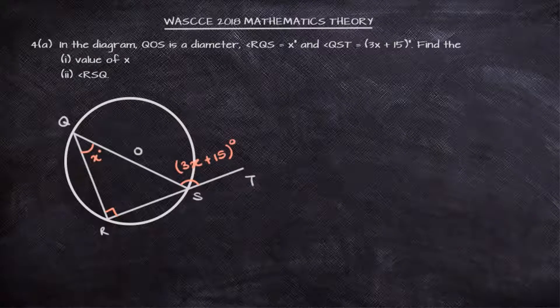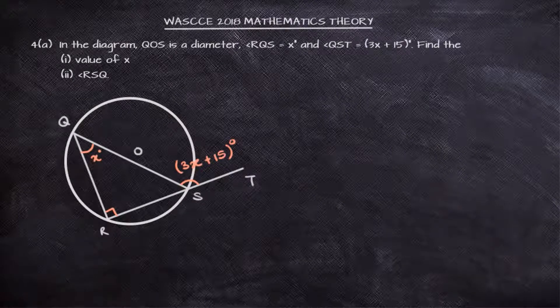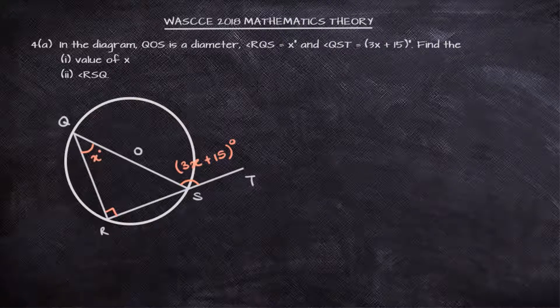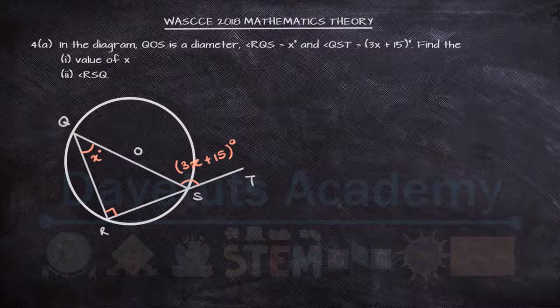Here we are given the diagram, the circle, and QoS is the diameter. Angle RQS is X, and angle QoSd, the obtuse angle, is 3x plus 15. But we have to find the value of X and angle RSQ.